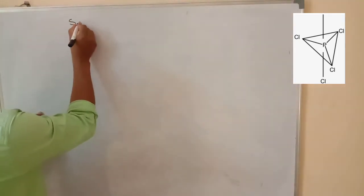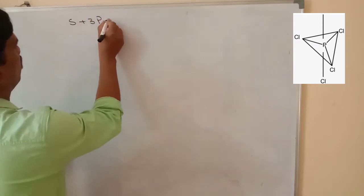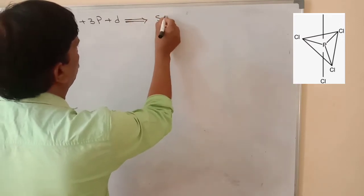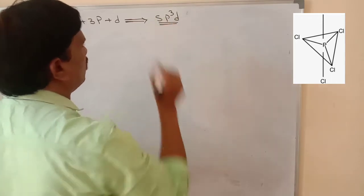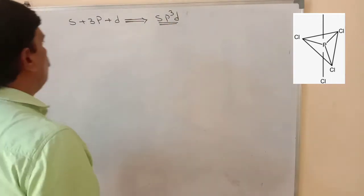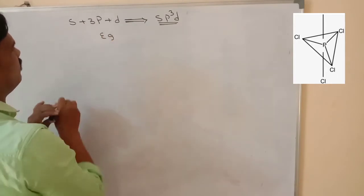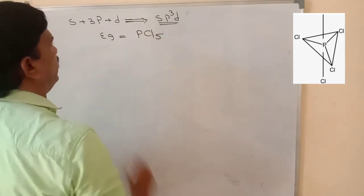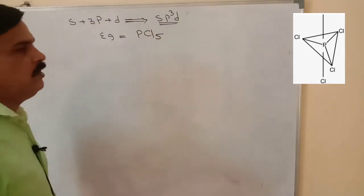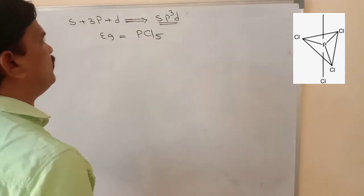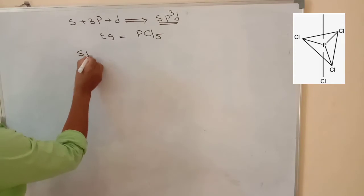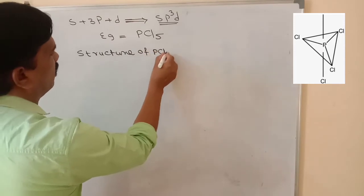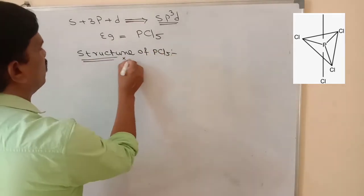One s-orbital, three p-orbitals, and one d-orbital combine to give sp3d hybridization. The best example for sp3d hybridization is phosphorus pentachloride. I want to discuss the complete structure of phosphorus pentachloride.